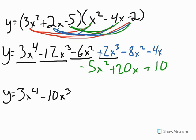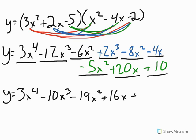And then I've got this negative 6x squared and negative 8x squared, which gives me a negative 14x squared. But then I also have the negative 5x squared, which gives me negative 19x squared. And then I've got this negative 4x and a positive 20x, which will combine to give me positive 16x.